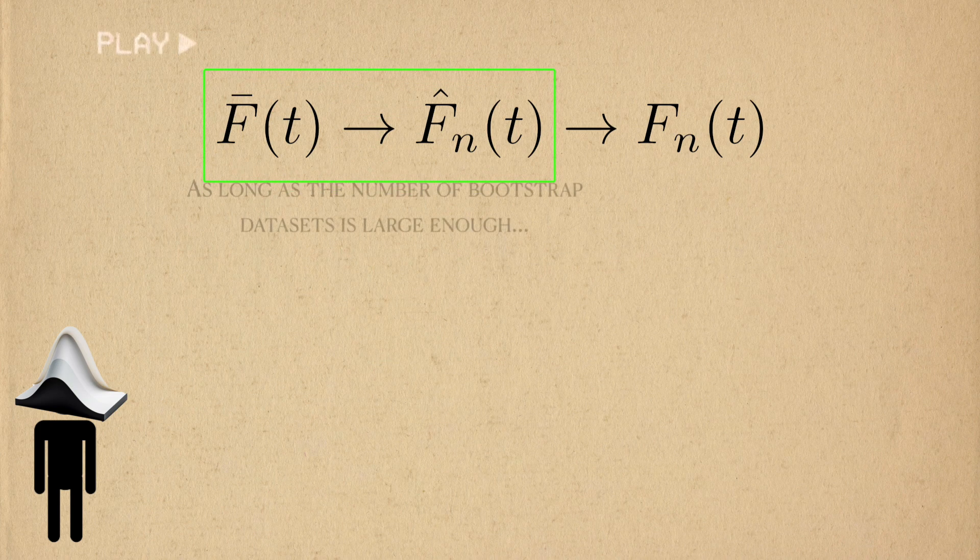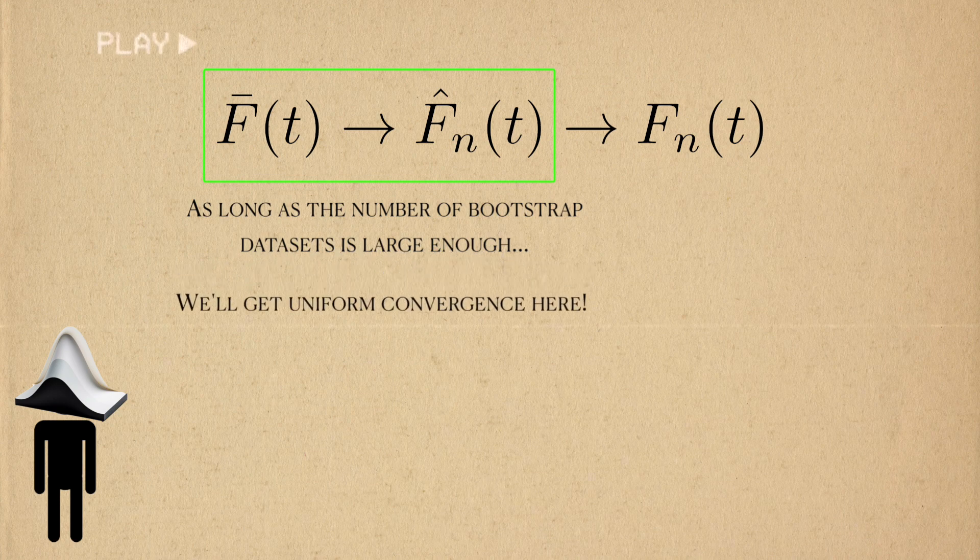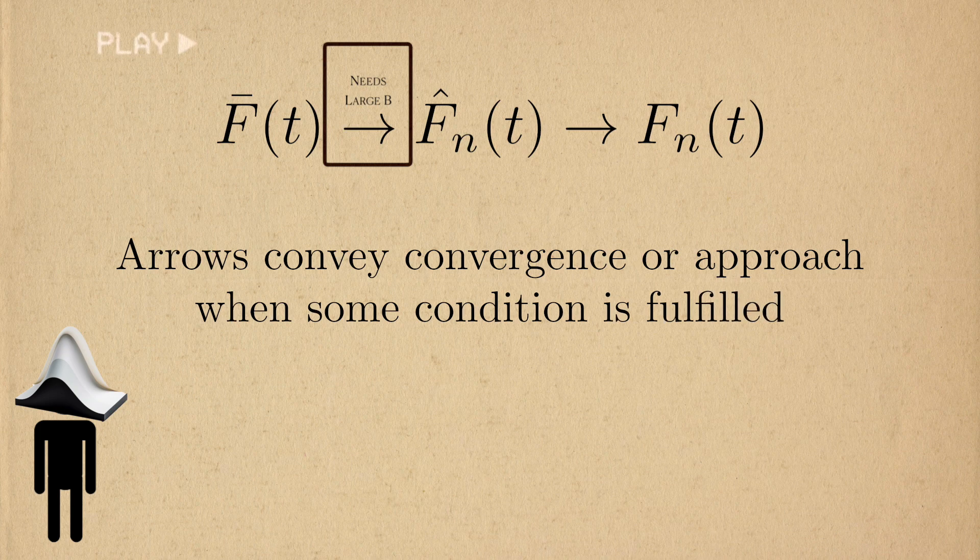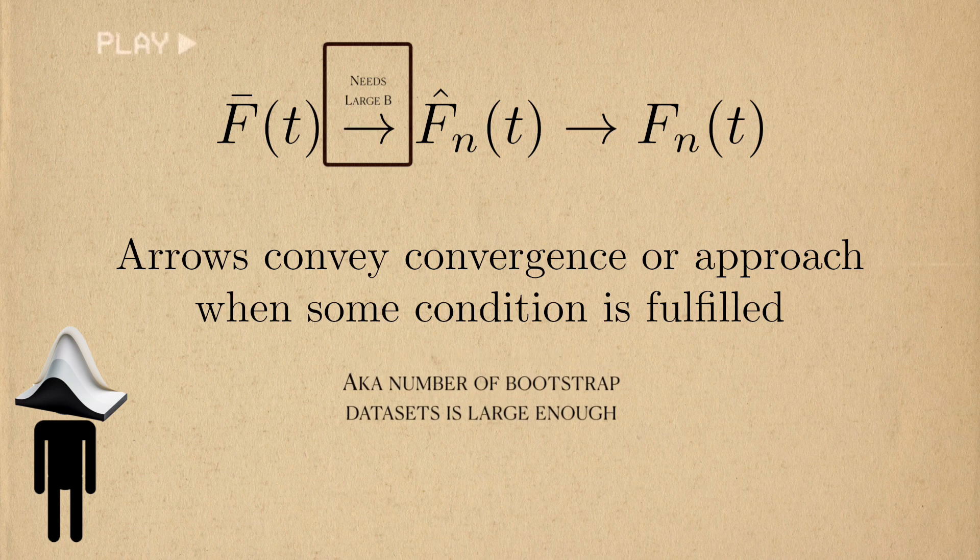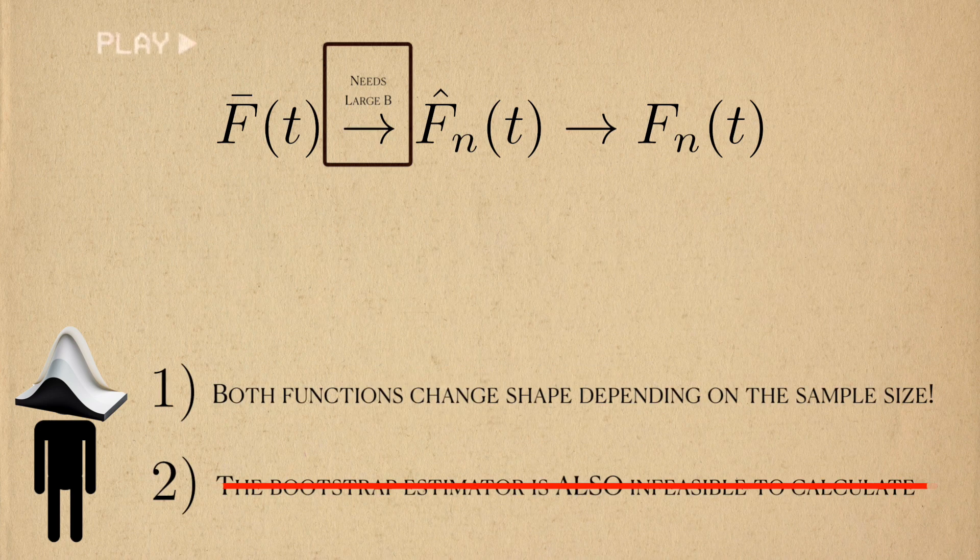It turns out that you actually don't need many bootstrap datasets for a Monte Carlo distribution to uniformly converge to the bootstrap distribution. We'll use this link to describe uniform convergence between these two distributions. We'll have uniform convergence when the number of bootstrap datasets is large enough. This solves our second problem.